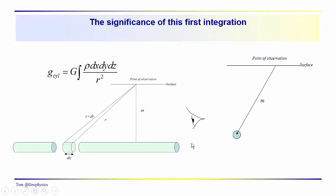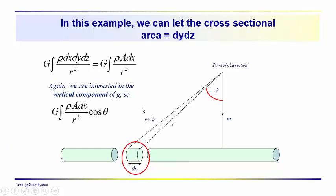Looking down along the length of the cylinder, we just see the circular cross section. M is a point off to the left or right — it's not necessarily a point directly above, not necessarily the minimum distance from the surface down to the center of the cylinder. This is the integral we want to evaluate.